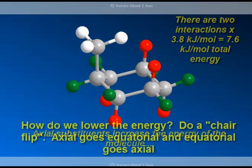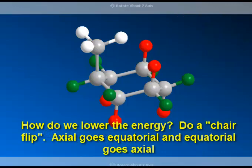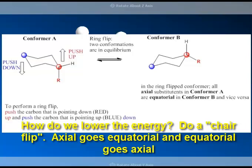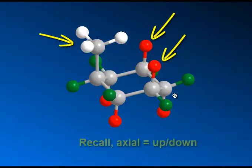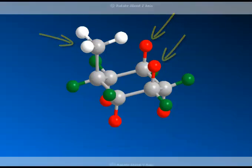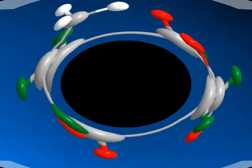Because of that, we need to have a way to reduce the energy. In chemistry, everything is looking to reduce its energy. So what we have to do is called a chair flip. In conformer A on the left, the blue carbon is up and the red carbon is down. In order to do a chair flip, we have to push the blue carbon down and push the red carbon up. The axial sites are up and down, and we want that methyl to no longer be axial but equatorial.